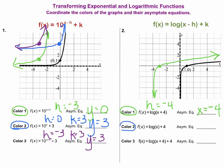Now let's do our second example in blue. We have f of x equals log of x plus four. Here we do not have an h value, so h equals zero, and our k value equals four. I will start at the key point (1, 0) and go up four units, putting me at (1, 4) — that is my new key point. From here I will draw the best graph I can. The equation for my asymptote will be x equals the h value, which is x equals zero.